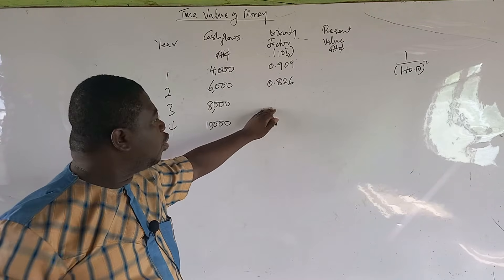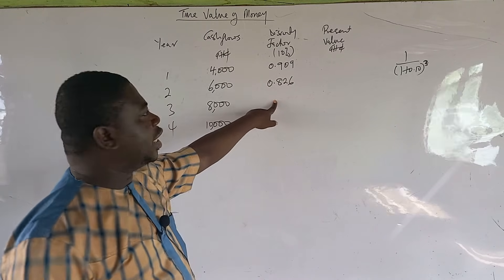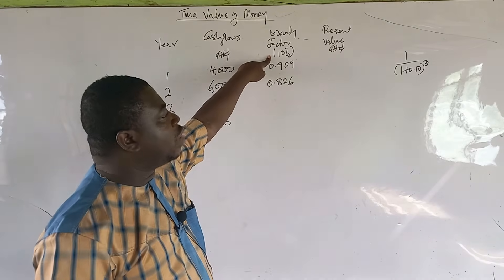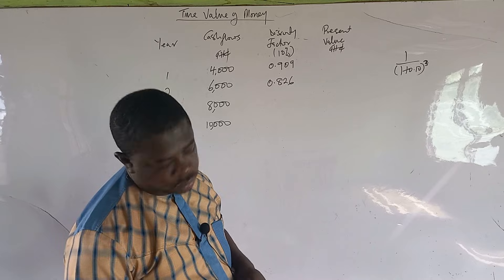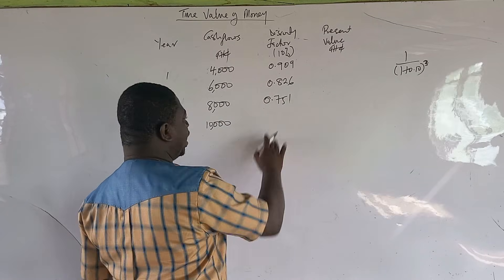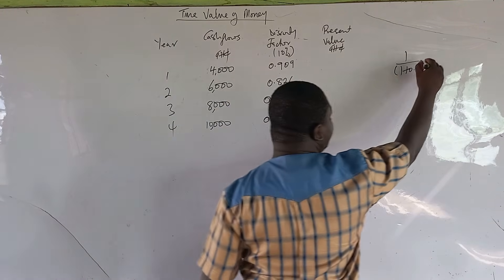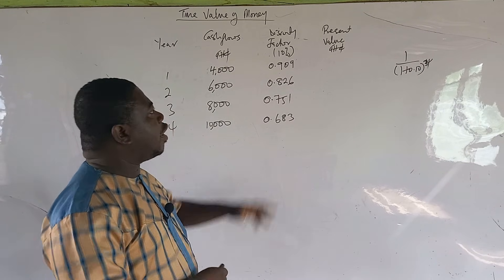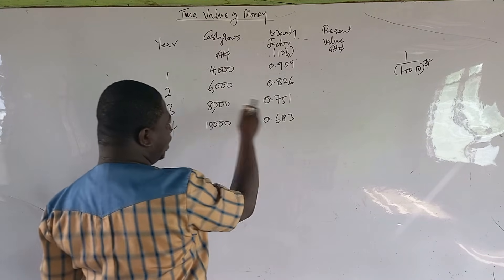For year three, use 1 over (1 + 0.10) raised to the power three, giving a discounting factor of 0.751. Note that the factor changes question by question depending on the percentage given — if it were 15% it would change. We are dealing with 10%, so raised to the power three gives 0.751. For year four, raised to the power four gives 0.683.